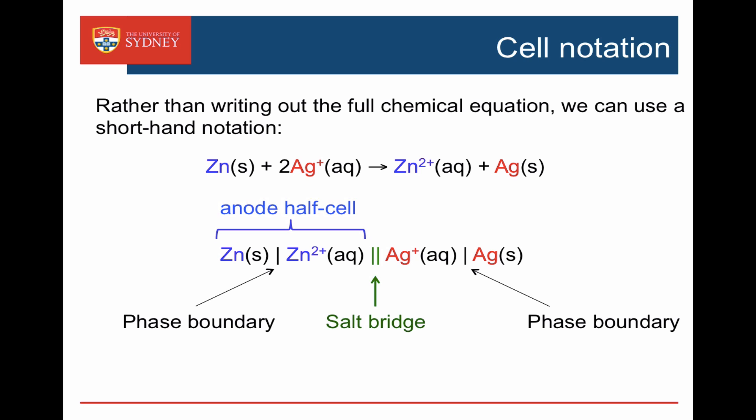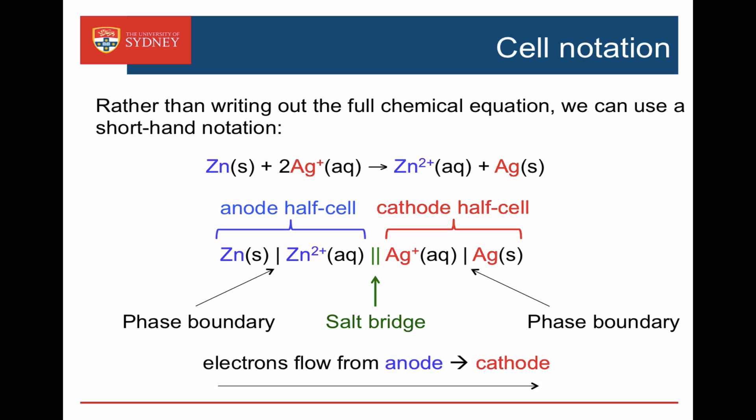On the left-hand side we have the oxidation half cell — the anode — and on the right-hand side we have the reduction half cell — the cathode. The electrons flow from the anode to the cathode.